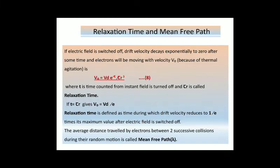Relaxation time and mean free path: if the electric field is switched off, drift velocity v_d decays exponentially to zero and the electron moves with velocity v_0. After the electric field is switched off, the average distance traveled by an electron between two successive collisions during random motion is called the mean free path, denoted by λ.